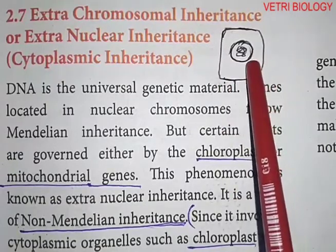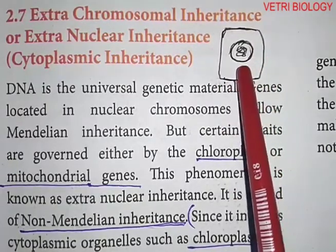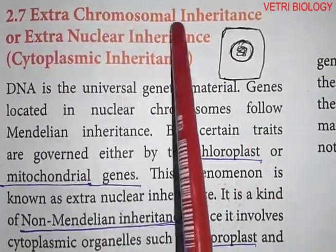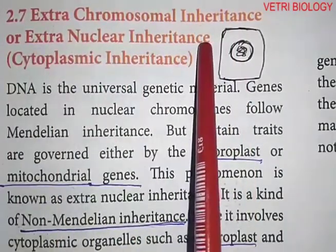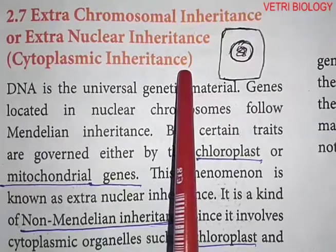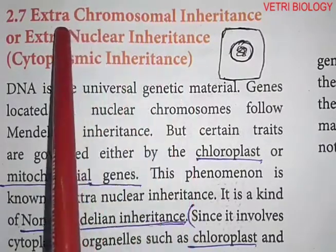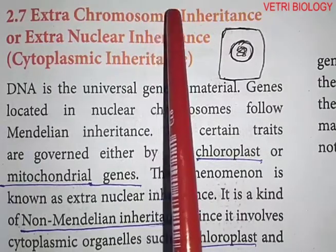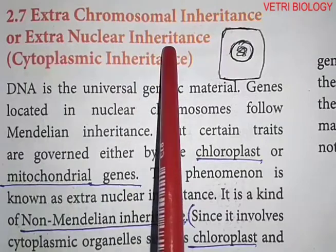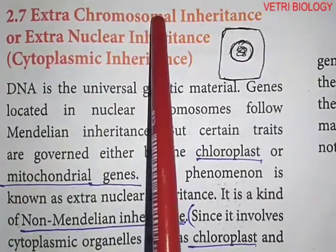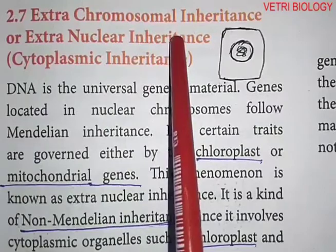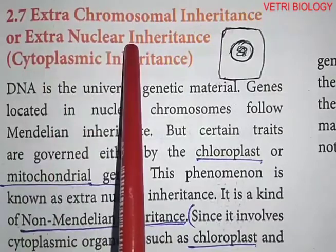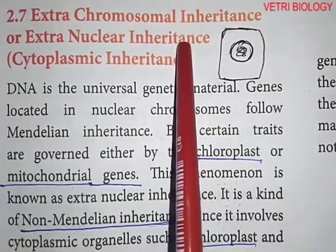This is called extra chromosomal inheritance or extra nuclear inheritance or cytoplasmic inheritance. Extra chromosomal inheritance means inheritance that occurs without chromosomes. Extra nuclear inheritance means inheritance that occurs without the nucleus.